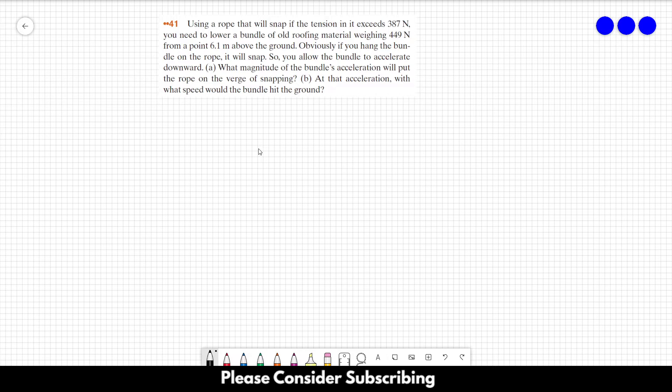Obviously, if you hang the bundle on the rope, it will snap, so you allow the bundle to accelerate downward. Letter A, what magnitude of the bundle's acceleration will put the rope on the verge of snapping? Letter B, at that acceleration, with what speed would the bundle hit the ground?